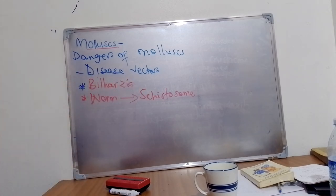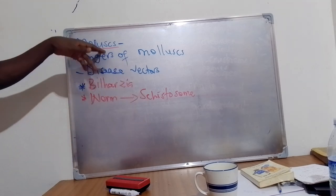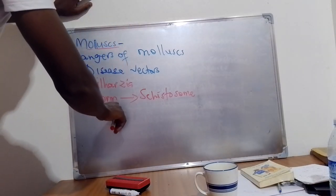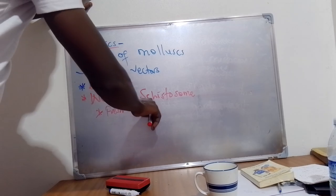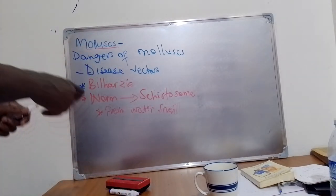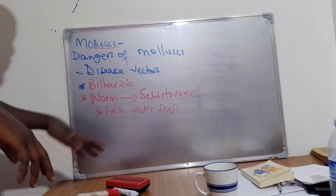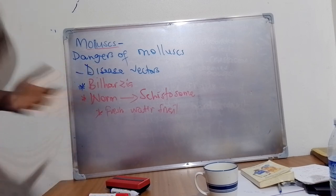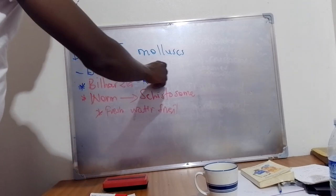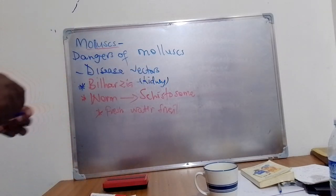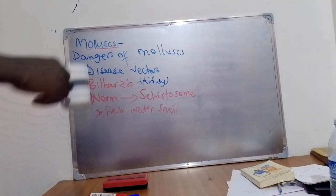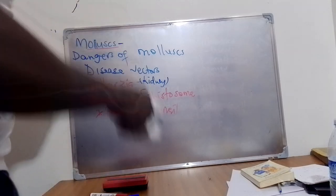This schistosome is carried by the mollusk known as the freshwater snail. The freshwater snail spreads schistosome, which causes bilharzia as a disease. Bilharzia affects the kidneys — it is a very dangerous disease. So it is not advisable to bathe in dirty water, because this is where freshwater snails are found.